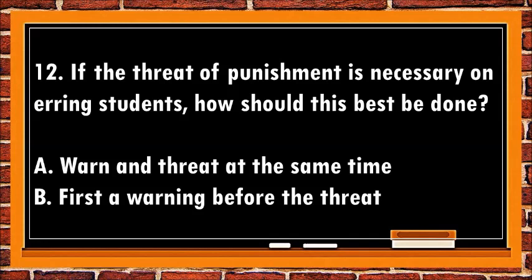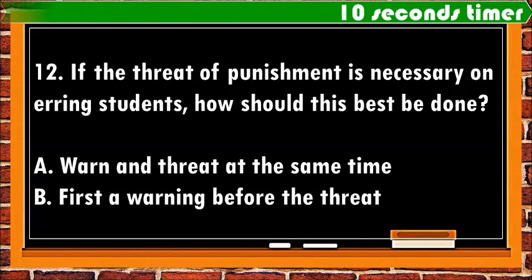12. If the threat of punishment is necessary on erring students, how should this best be done? a. Warn and threat at the same time. b. First a warning before the threat.